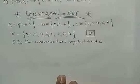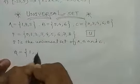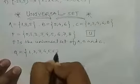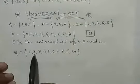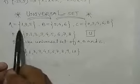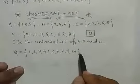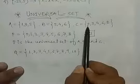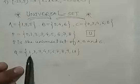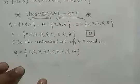एक और example — मान लिजिए set Q = {1, 2, 3, 4, 5, 6, 7, 8, 9, 10}. अगर हमसे पूछा जाए कि यह Q set, A, B, C का universal set है — तो यह universal set नहीं होगा. क्योंकि A और B के elements तो इसमें हैं, लेकिन C का element 0 है — वो 0 Q में नहीं है, Q में यह 0 नहीं है. इसलिए हम यह तो कह सकते हैं कि Q, A और B का universal set है, but C का universal set नहीं है.